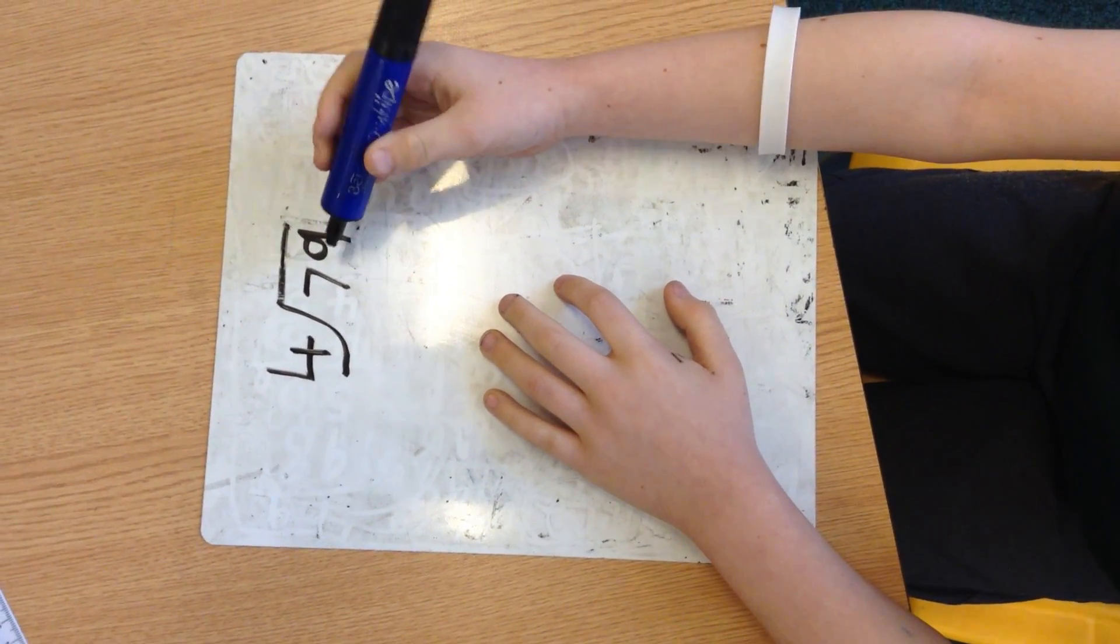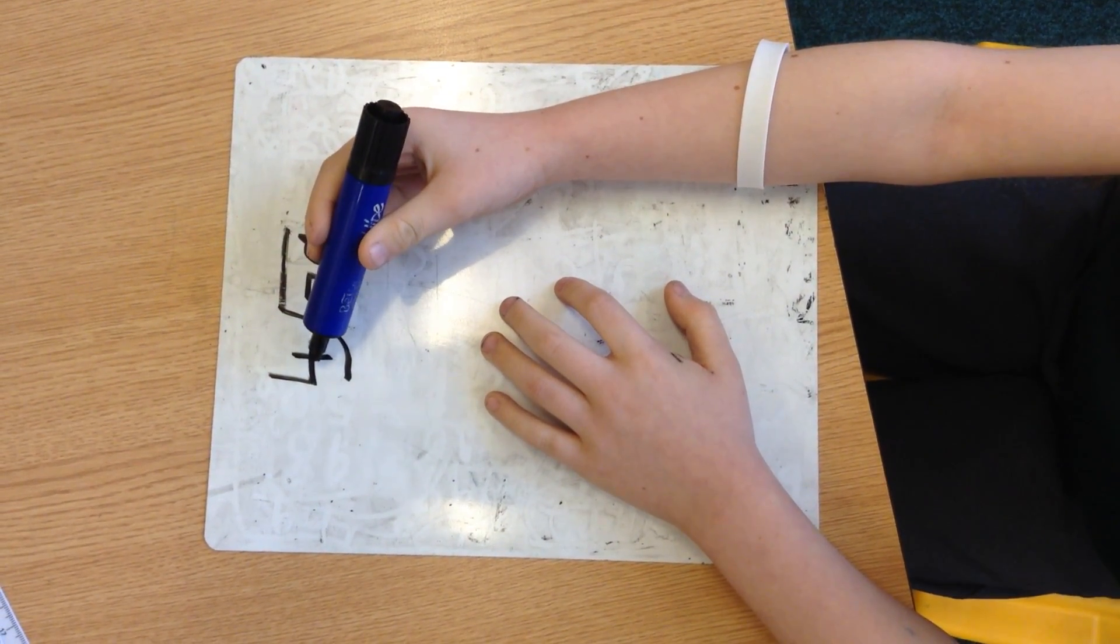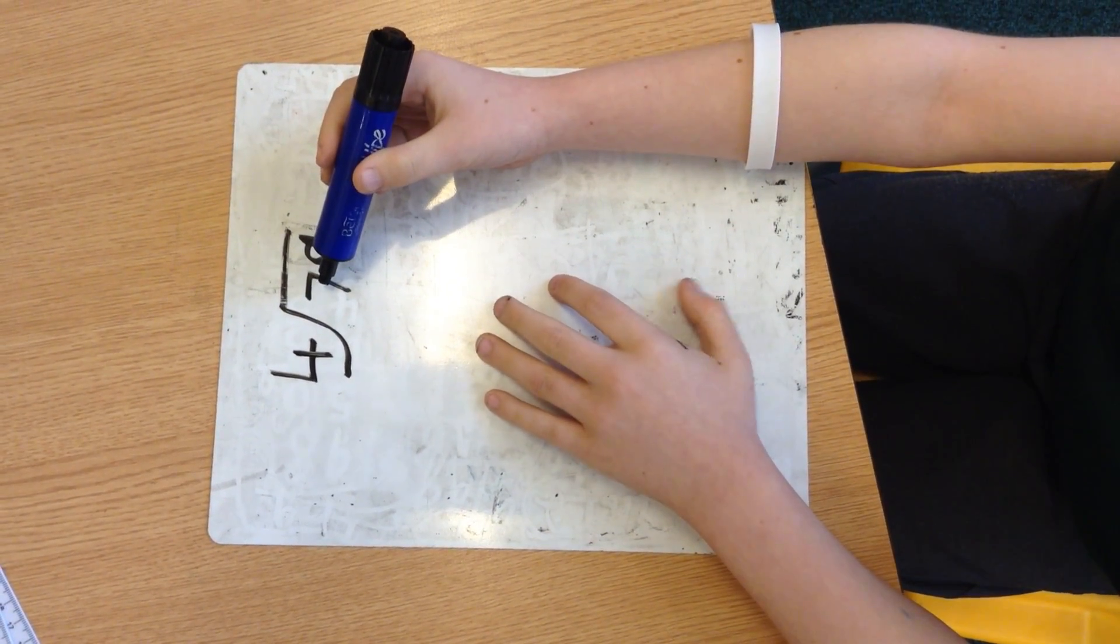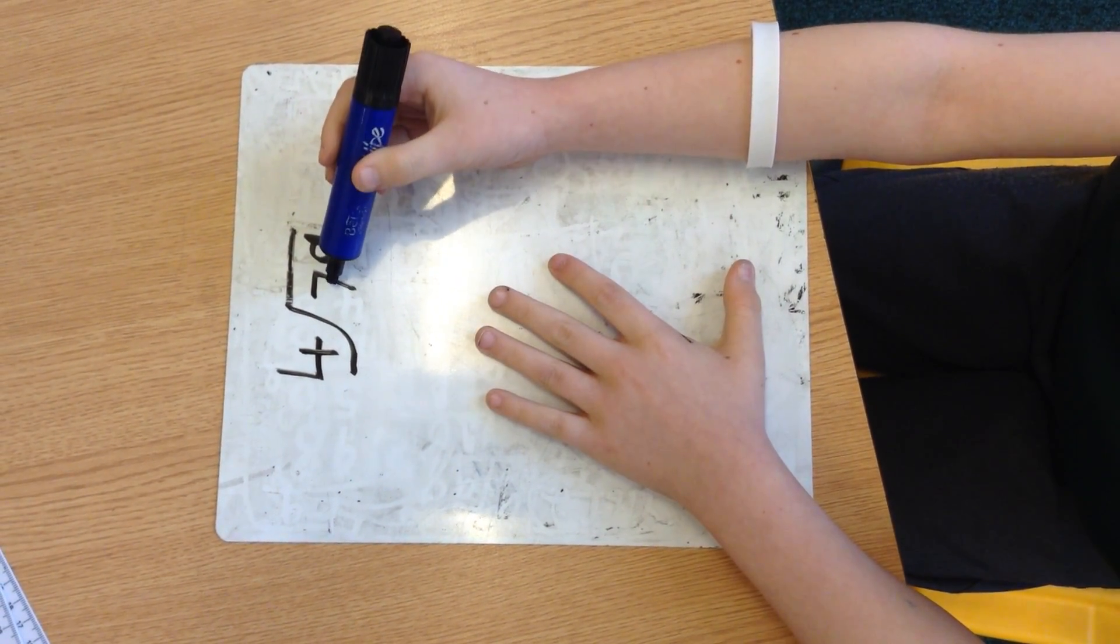The bus stop method: first you would figure out how many fours can you fit into 70, which we're just going to think of it as 7.